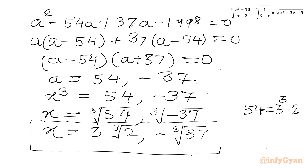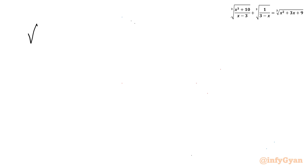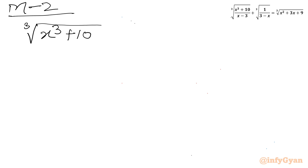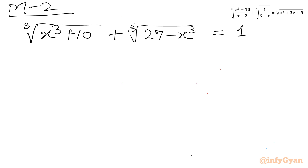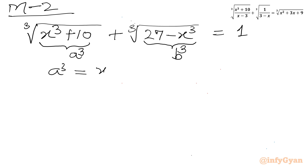Method number 2 uses substitution. Starting from the simplified equation cube root of (x³ + 10) + cube root of (27 − x³) = 1, let a³ = x³ + 10 and b³ = 27 − x³. Adding these: a³ + b³ = 37. And from the equation, cube root of a³ + cube root of b³ = 1, so a + b = 1.